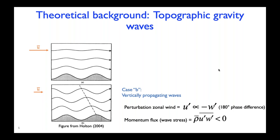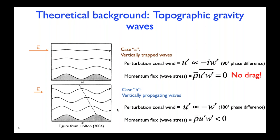We know that waves transfer momentum and energy. To see how this works for vertically propagating gravity waves, we need to know how the perturbation U wind and vertical velocity are correlated. It turns out there's a 180-degree phase difference between them. The momentum flux, or wave stress, is given by the covariance of U and W times the area-average density. Due to the 180-degree phase difference, the sign of the momentum flux is negative, meaning momentum is transferred downward into the Earth's surface — the wave exerts an eastward force on the mountains when the wind is from the west. For vertically trapped waves, the phase difference is only 90 degrees, so their correlation is zero, and there is no momentum flux or drag force.